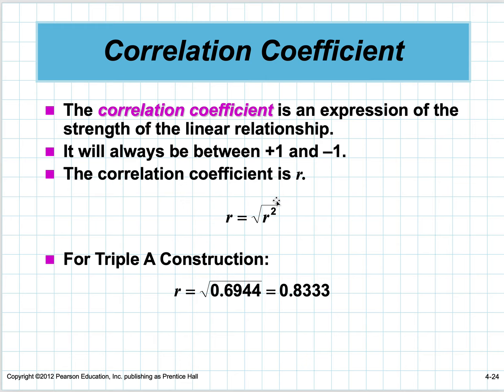If you take the square root of R-squared and get r, you get the correlation coefficient, also called the Pearson correlation coefficient. Even though QM calculates it for every kind of regression, it really only works for simple regression, and it's a measure of linearity.